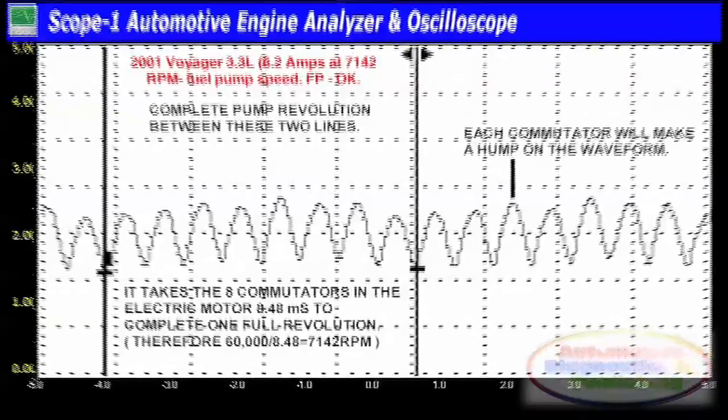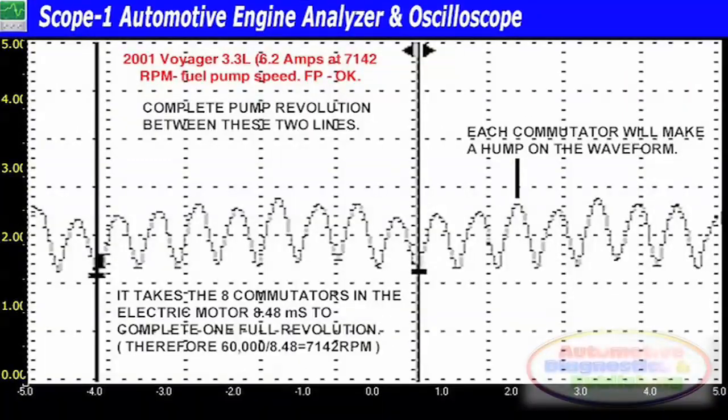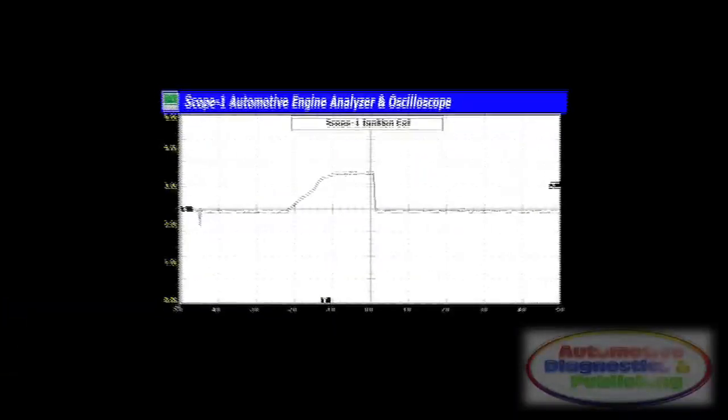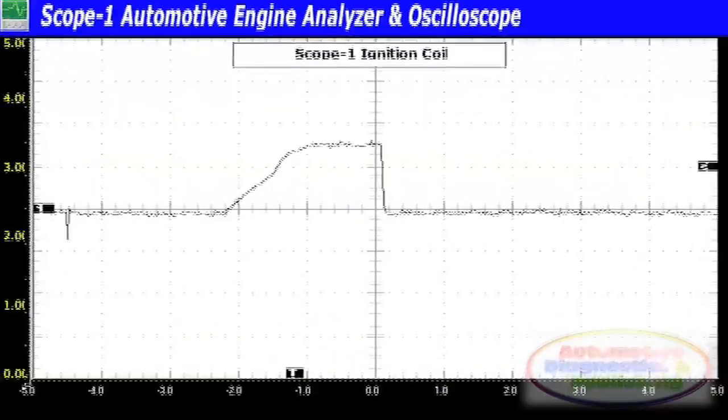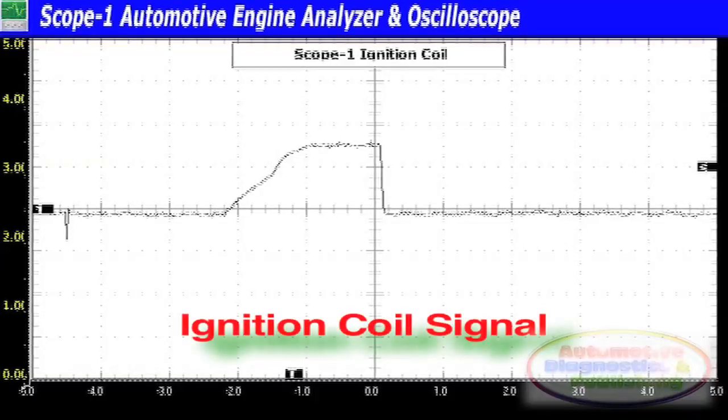The Scope 1 toroidal low current probe is a rugged unit packed with electronics inside. The idea is to send to the Scope 1 Automotive Engine Analyzer a clear and reliable output. The toroidal low current probe can be used to detect the following: